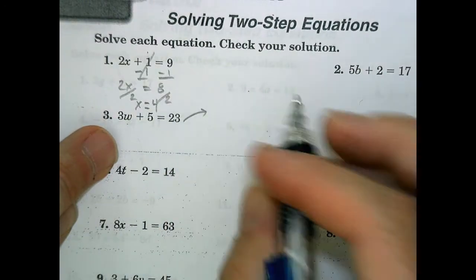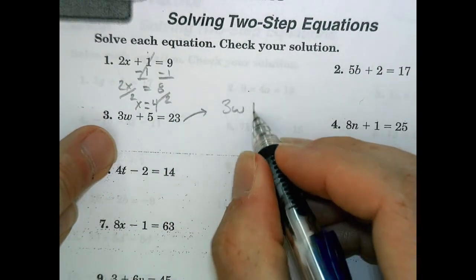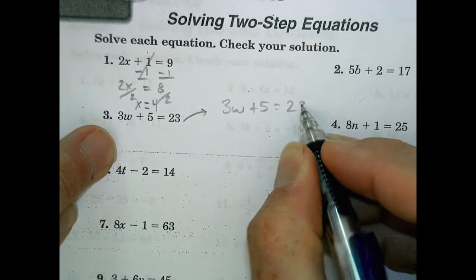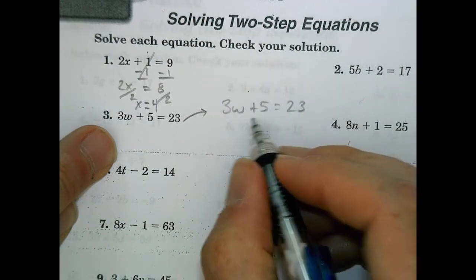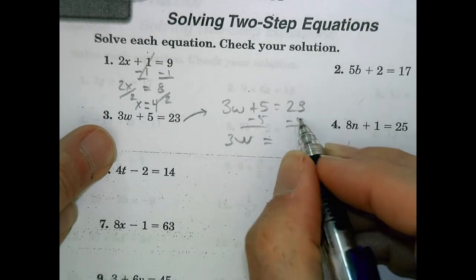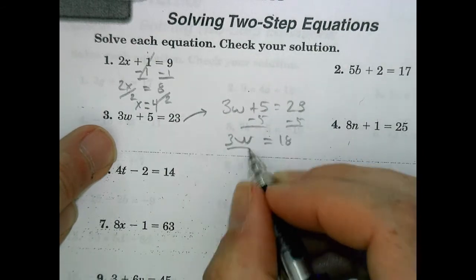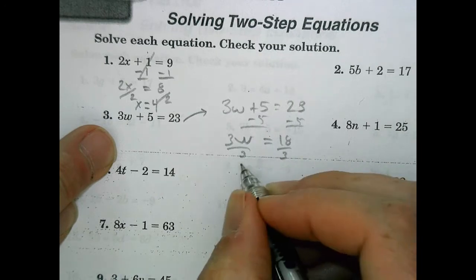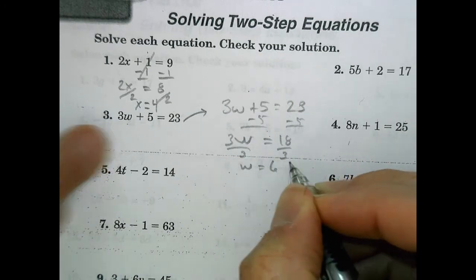This one, I'm going to rewrite it over here so I have some space. 3w plus 5 equals 23. We're going to subtract 5 from both sides. So 3w equals 23 minus 5 is 18. Divide both sides by 3, so w equals 6.